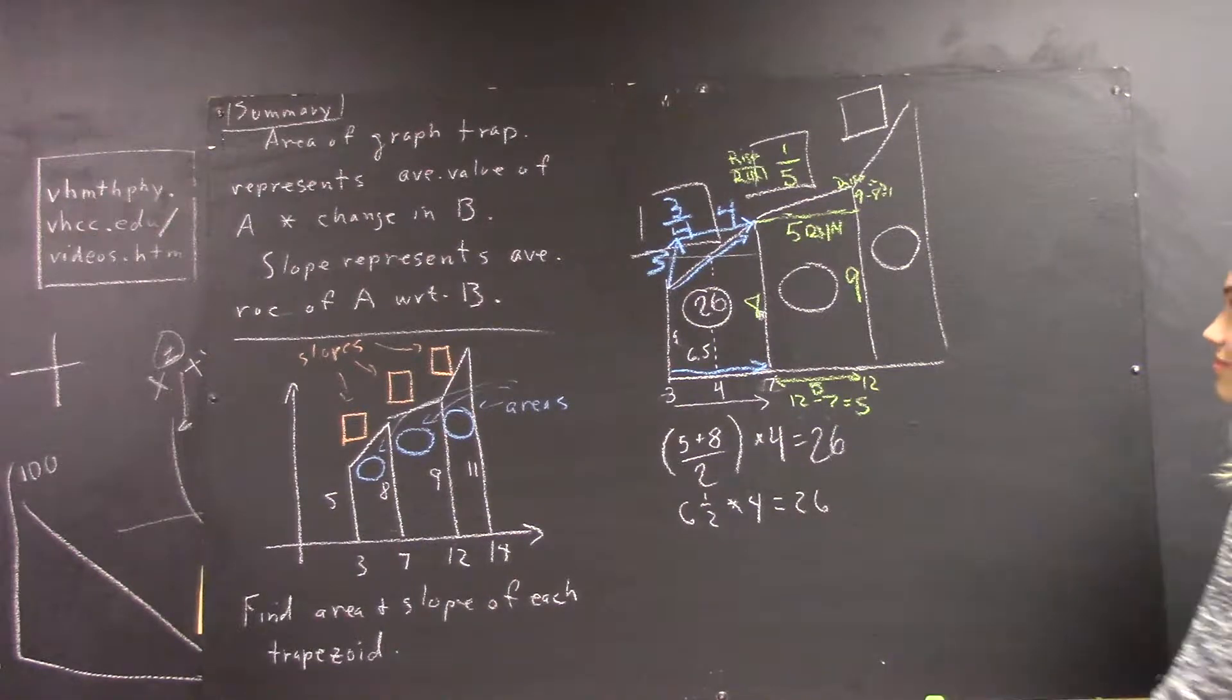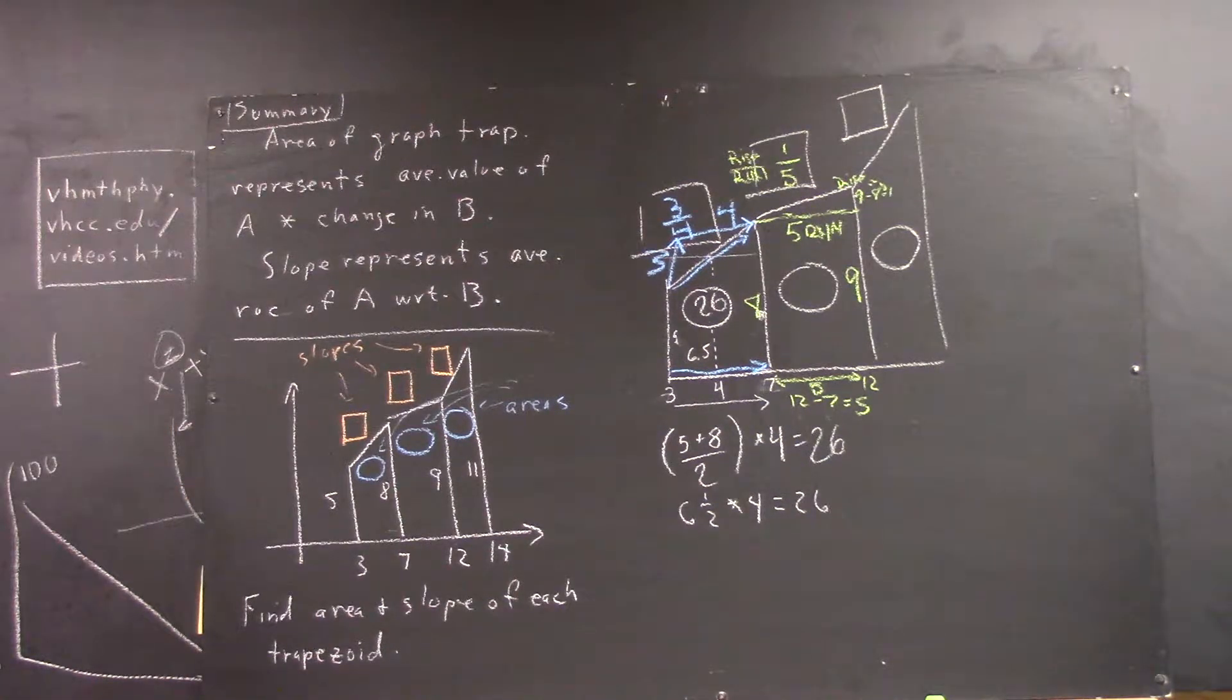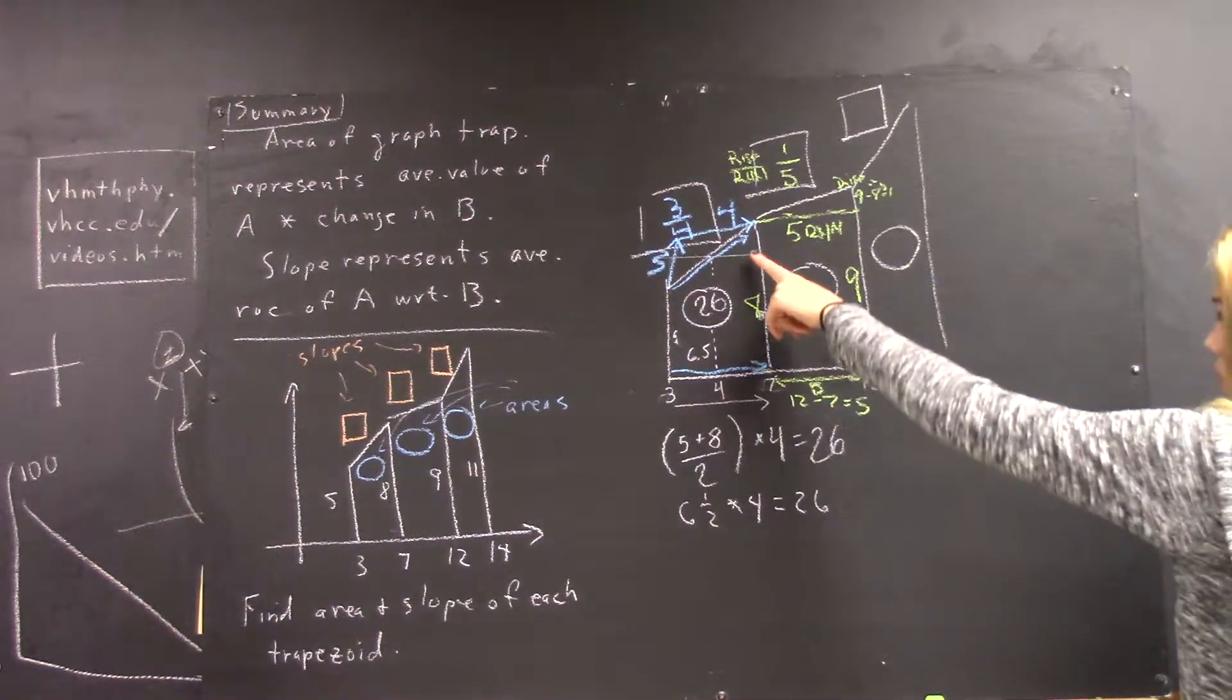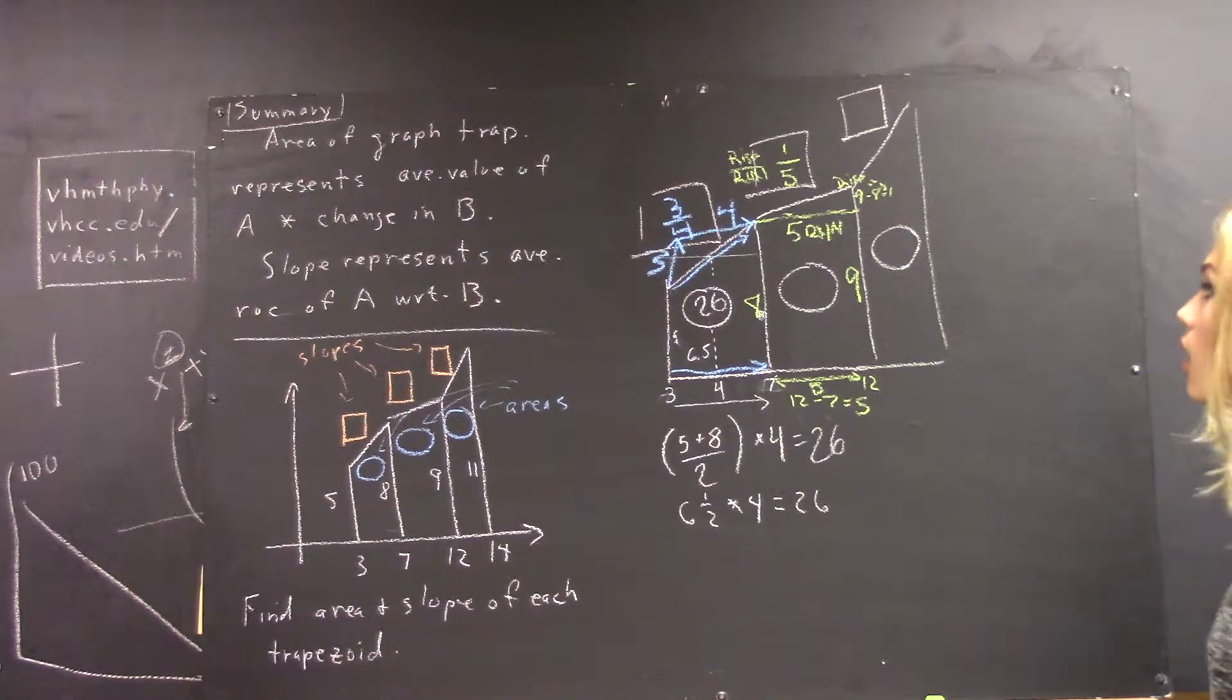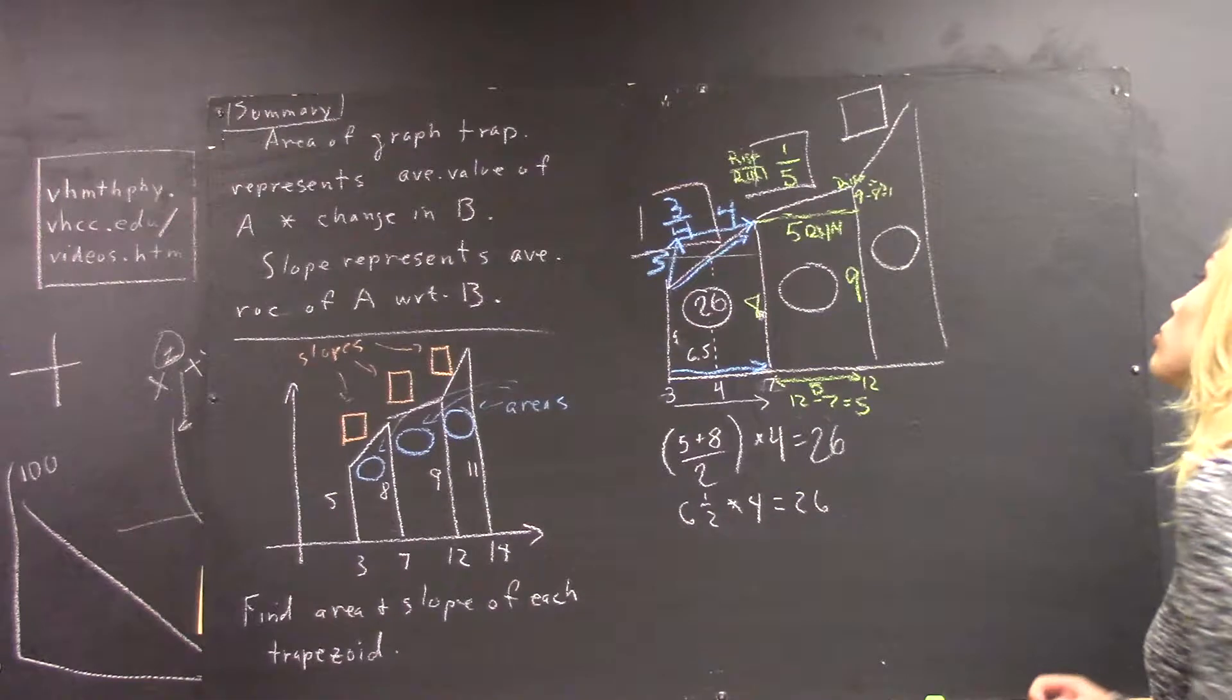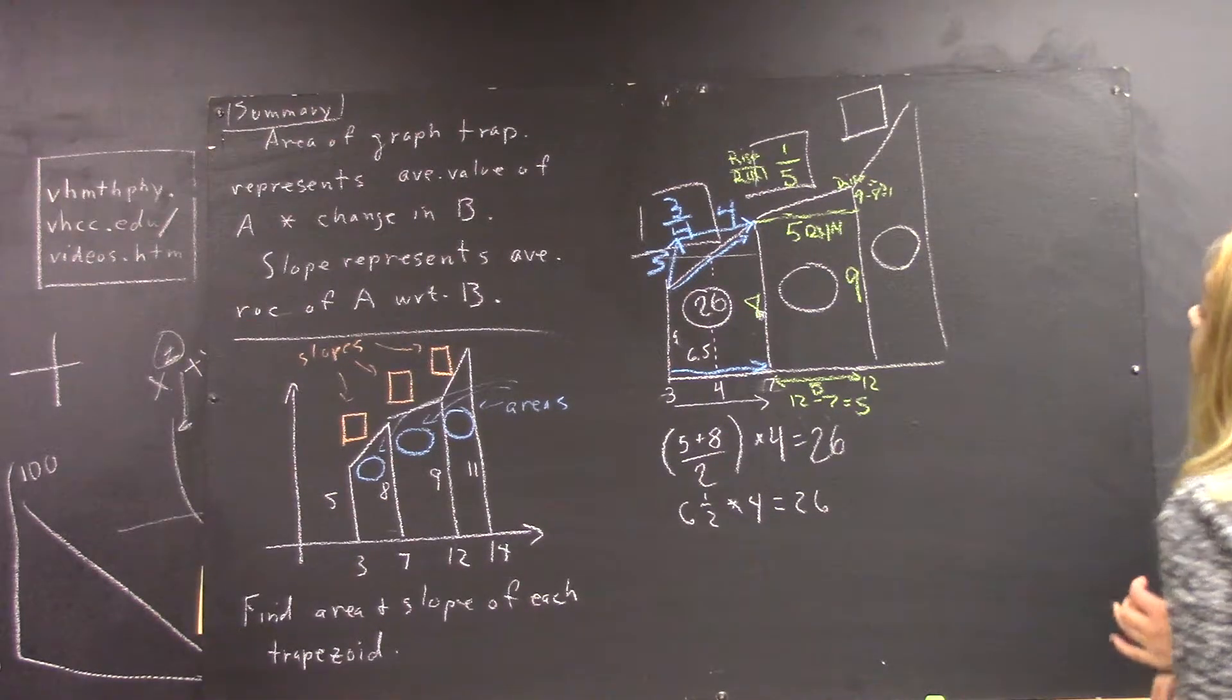Okay, explain. So 12 minus 7 equals 5, that would give you the run. So the run is 5. And then 9 minus 8 is 1, so that would give you the rise. So rise over run equals one-fifth.